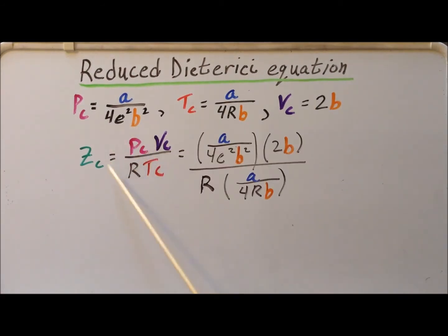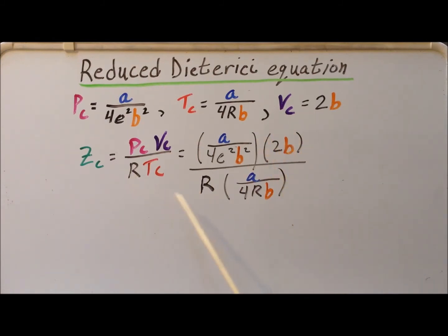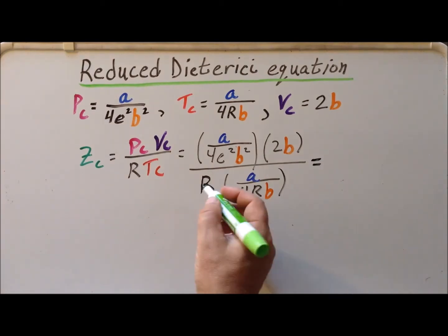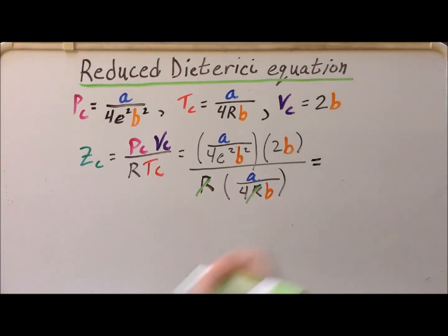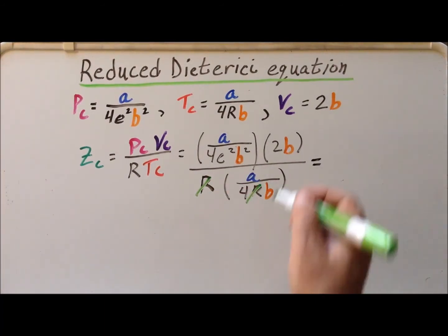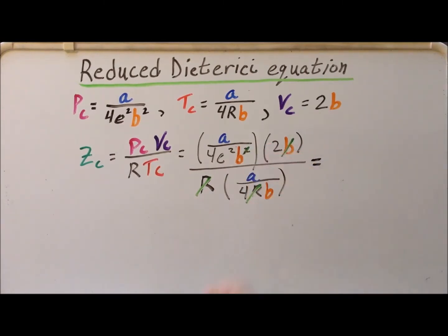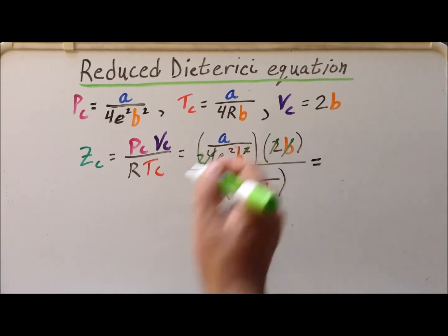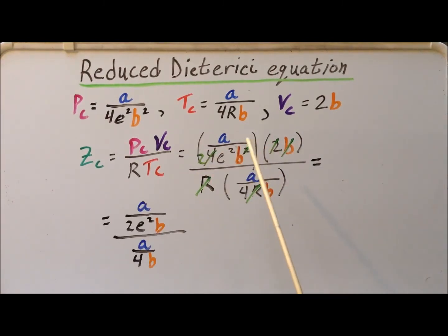Next, we simply substitute the values for the critical constants into this equation. Here we have P sub C, here we have V sub C, R is still simply R, and then this is T sub C. We can begin canceling: R cancels with R, B cancels with B² leaving 1/B, and 2 with 4 giving a 2. Therefore the numerator becomes A over 2e²B and the denominator simply becomes A over 4B.